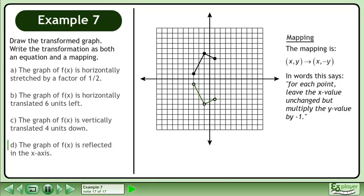The mapping is shown. In words, this says, for each point, leave the x value unchanged but multiply the y value by negative 1. Thank you.